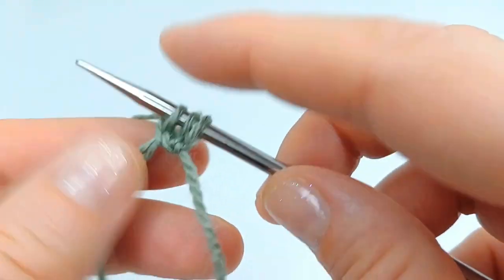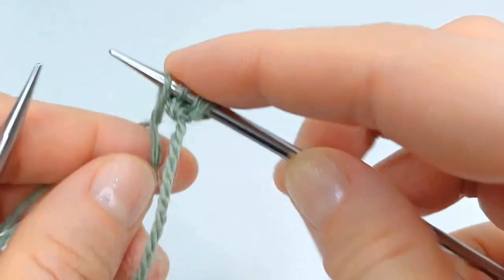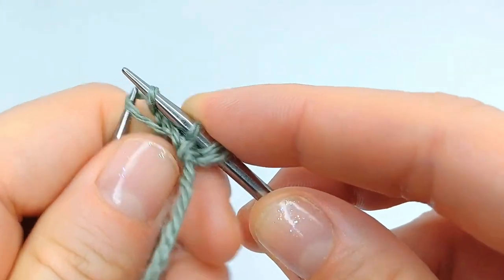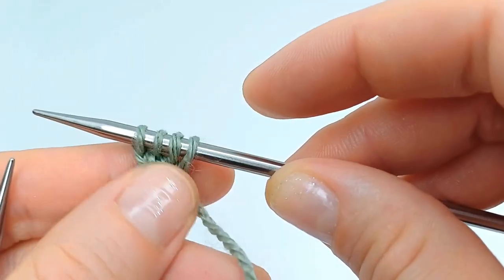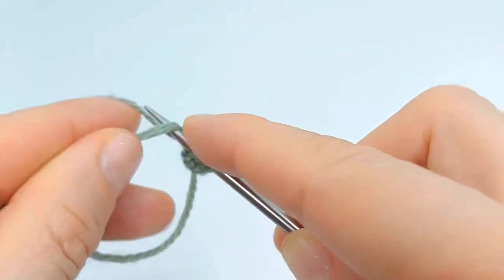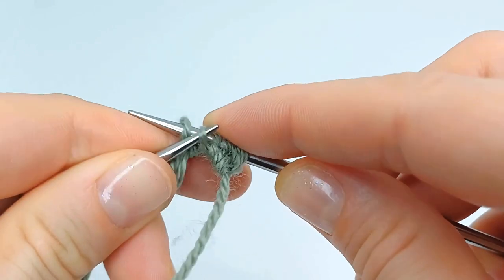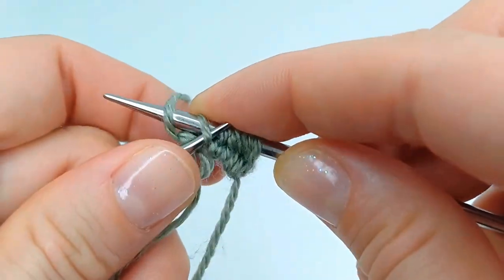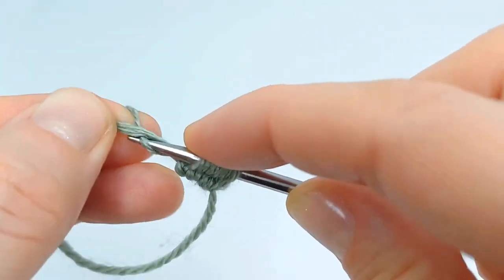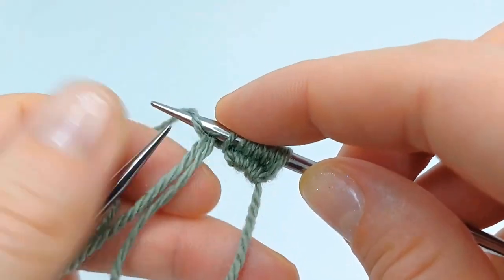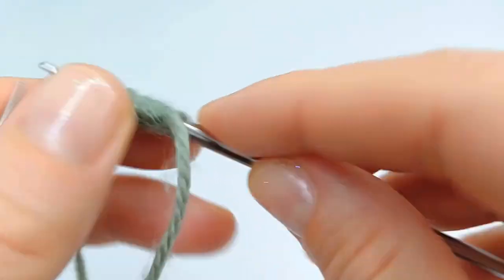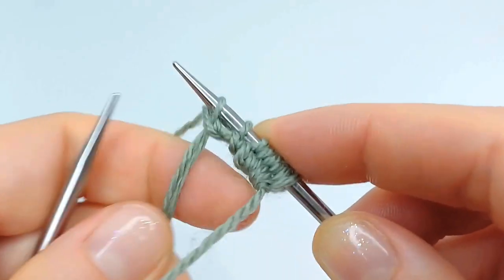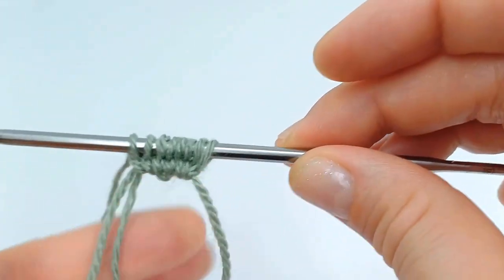To be easier to distribute the stitches between the needles, make stitch number four and pass. Now we have four loops. Continue this process until you have your eight stitches.